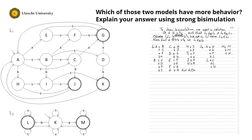Okay, so how to proceed? How do we find this Q? The trick I always use is to start with the initial states. The initial state of L1 is A, and the initial state of L2 is K. If I look at the actions in A, I can perform an S. In L1, A brings me with an S to B. In K, I can do an S as well, and that brings me to K. Hence, I need to add relation BK to Q, because otherwise it cannot be a simulation.